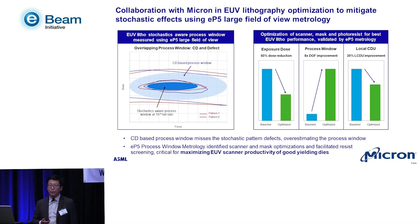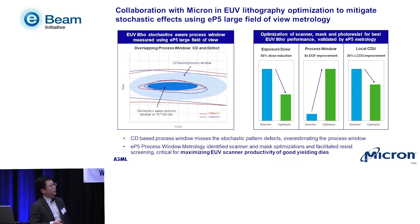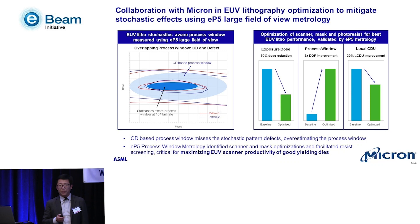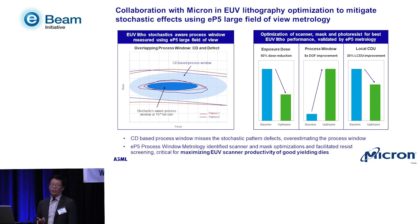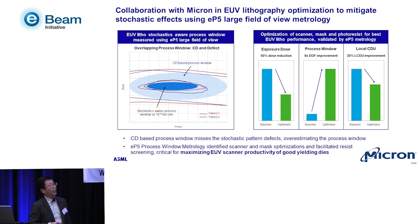We brought in the EP5 to provide massive metrology and quantify what we call a stochastics-aware process window. The light blue oval shape is the traditional Bossung curve — the CD-based process window at ±10% CD. But looking at the actual failure rate due to EUV stochastic effects, we get a much smaller process window. This drives the setup of the scanner operating point, source-mask optimization, and resist selection. Together with Micron and other ASML teams, we demonstrated reduction in exposure dose, improvements in process window, and improvements in local CD uniformity.